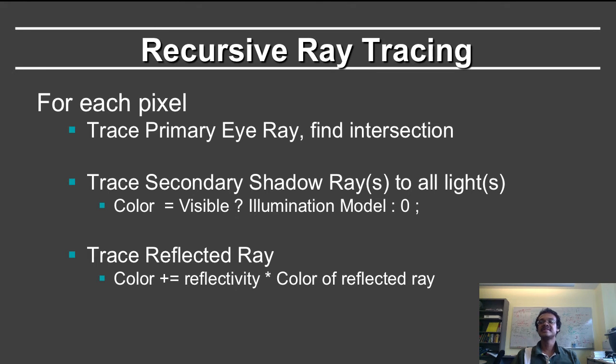Then you trace the secondary ray, or the shadow ray, to the light sources. You may trace one shadow ray for each light source. The color, if the shadow ray is visible, corresponds to the illumination model in effect, for example, the Blinn-Phong model and the Lambertian diffuse model. If the ray is blocked, there is no direct illumination from the light sources.